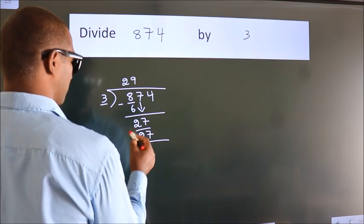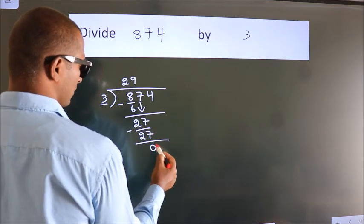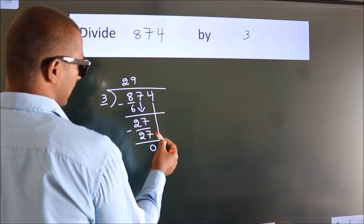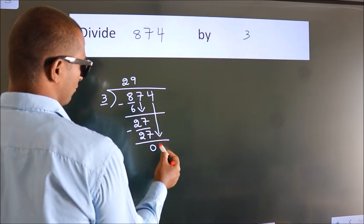Now we subtract. We get 0. After this, bring down the beside number. So 4 comes down.